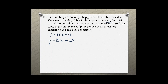Now I have my equation, and I can use it to find out how much Leigh and May were charged if it took the person three hours to set up the service. So x represents time, and the three should go in for x. So y equals 13 times 3 plus 29. y equals 39 plus 29.